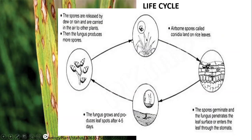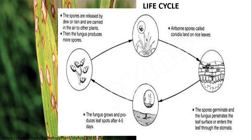Here you can see a simplified version of this life cycle. Airborne spores called conidia land on the leaf surface and germinate there. The fungus penetrates the leaf surface or enters through stomata, grows inside, and produces spindle-shaped or eye-shaped lesions. In these lesion regions, more spores are produced, which are blown away by wind or rain splashes, causing secondary infection when these spores land on other plant surfaces.